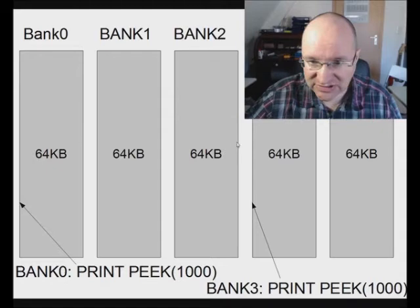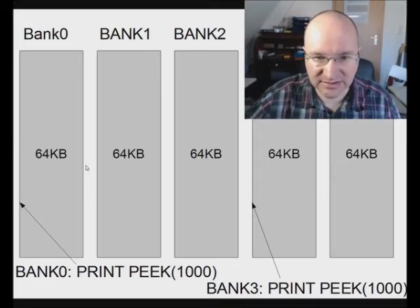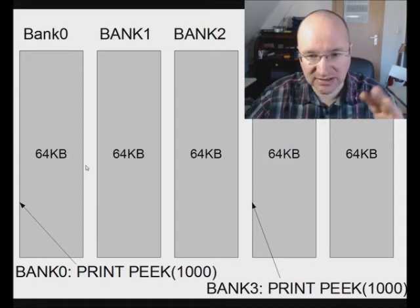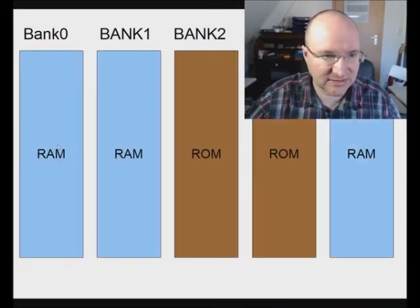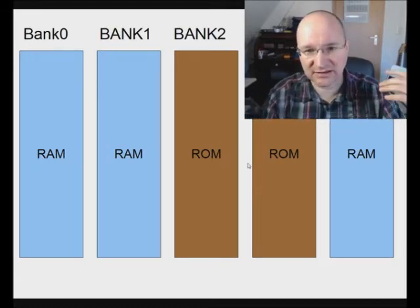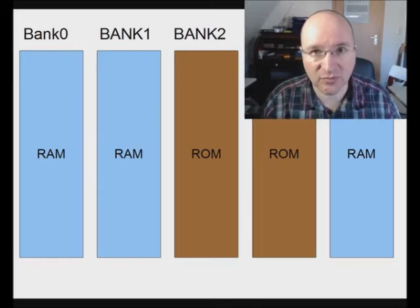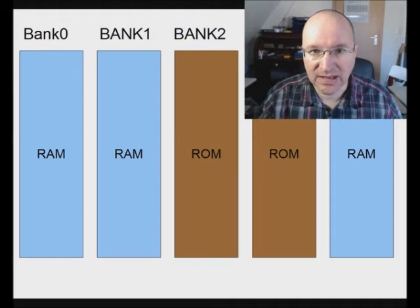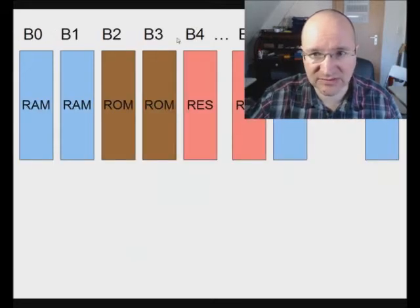The separation into different blocks is not only about different addressing areas — the Commodore 65 developers also used it to have different kinds of memory. Bank zero and bank one are RAM, so you can read and write them. Bank two and bank three are ROM, containing permanently stored content like the kernel, BASIC commands, graphics commands, and sub-programs like the monitor and editor.